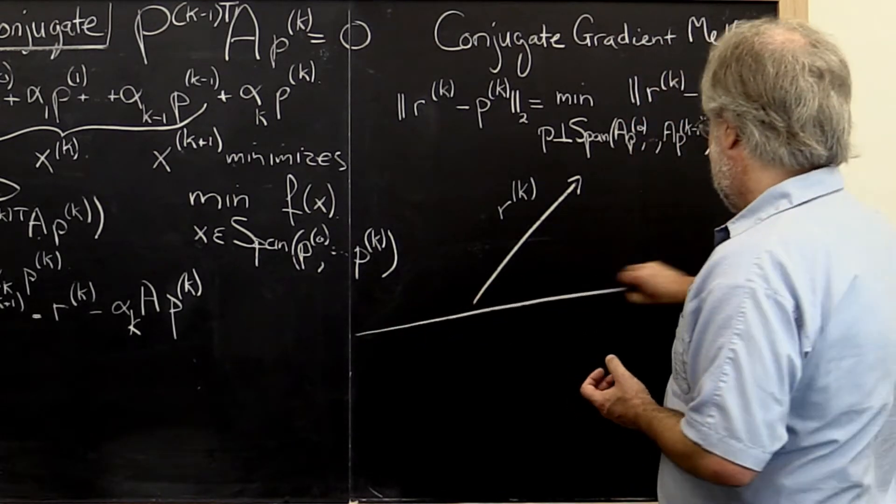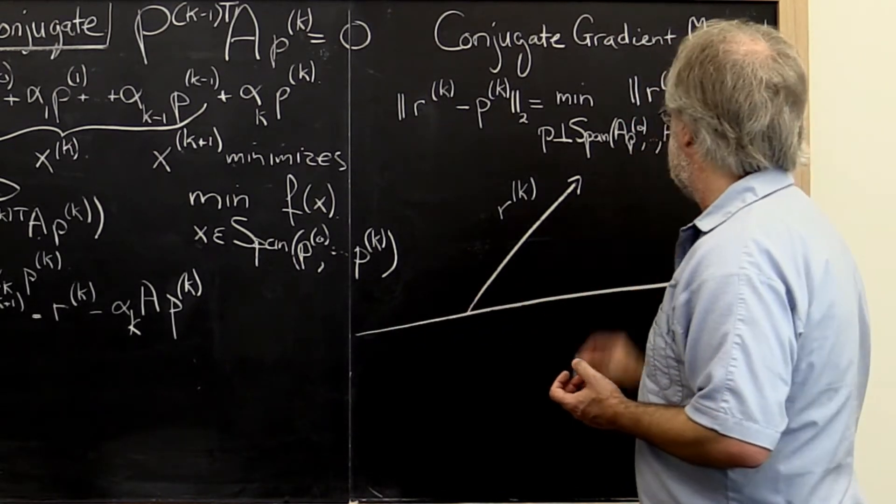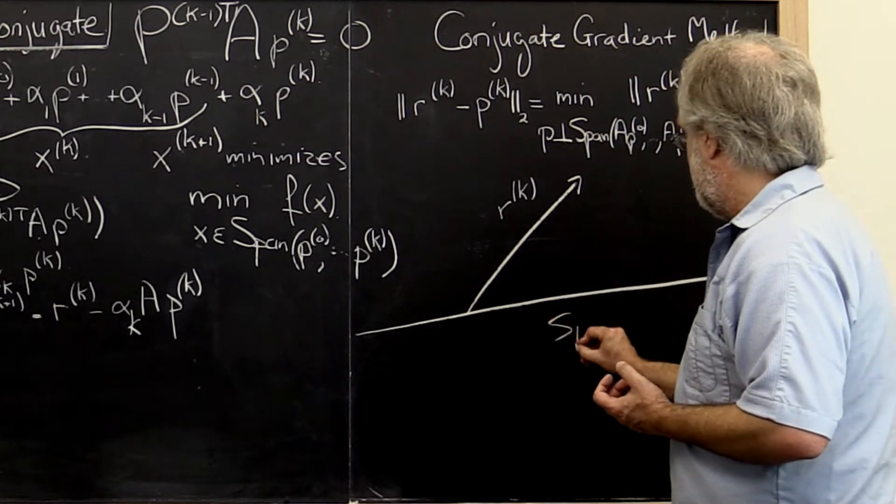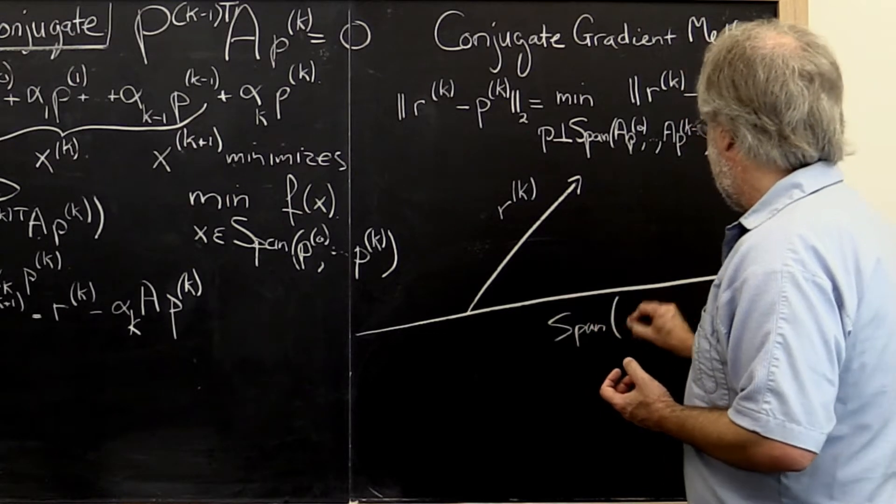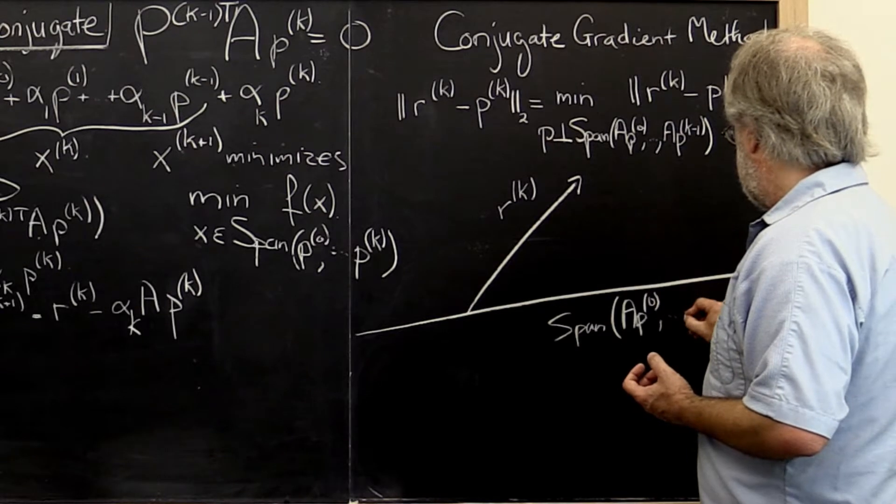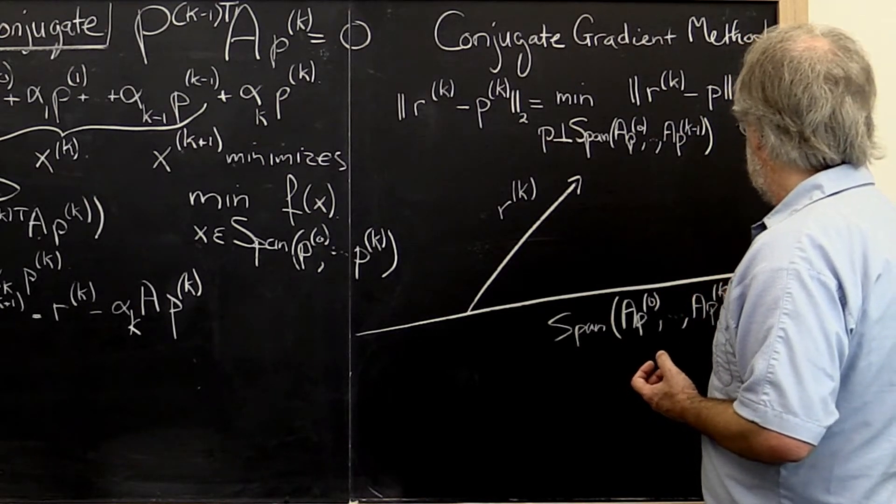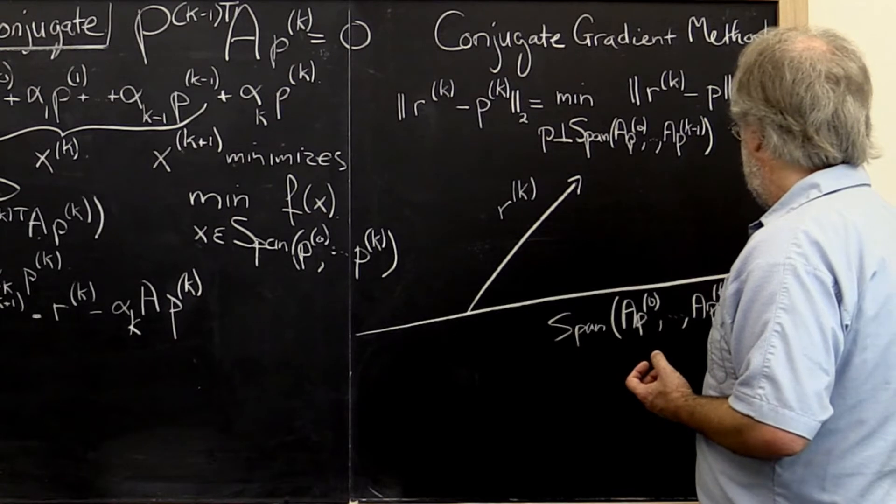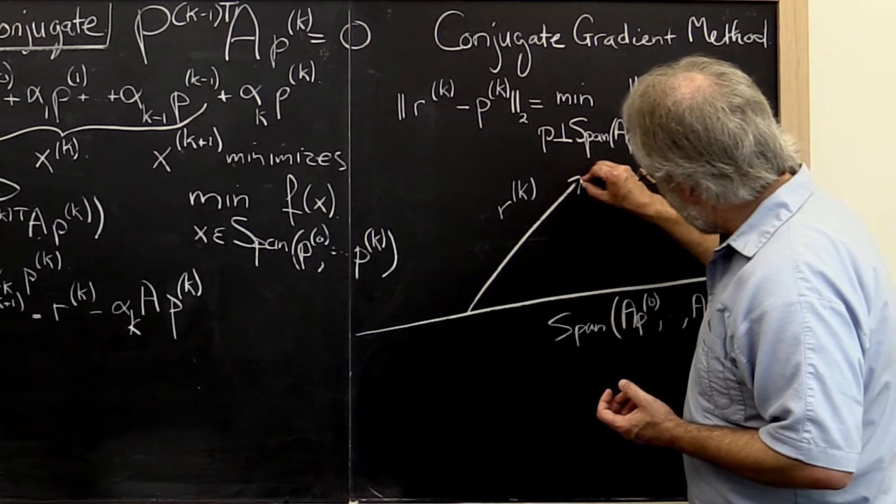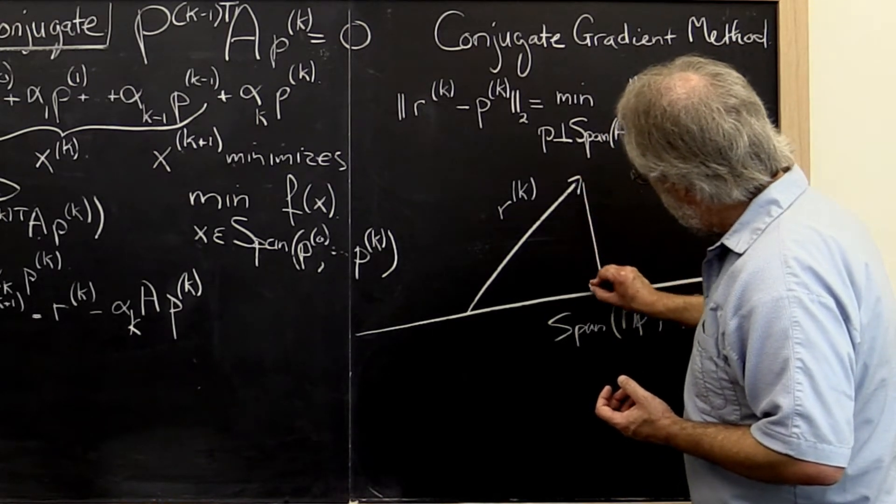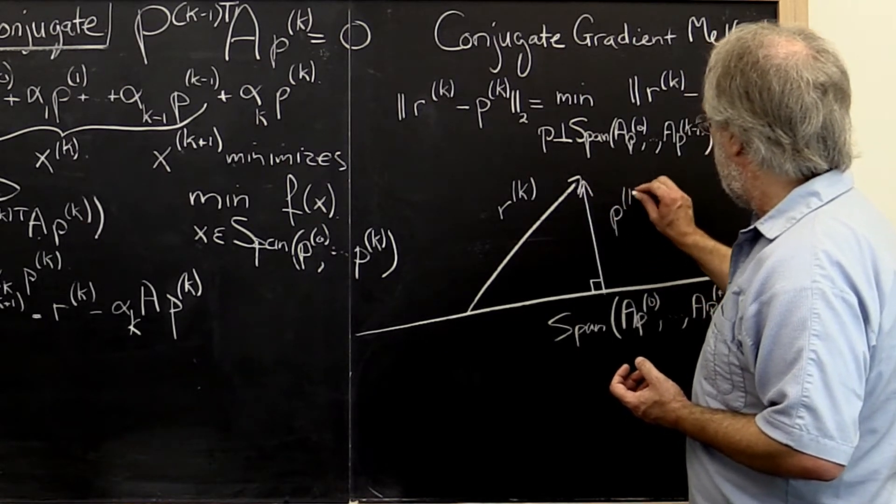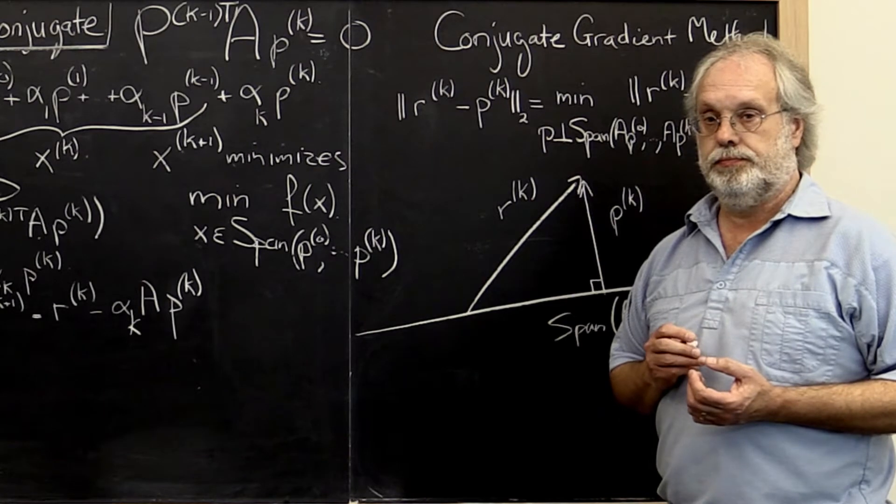We have a space, subspace, that's characterized as the space spanned by A times the various A conjugate directions, the previous ones. And what this here says is that we want to find the vector that's perpendicular to that subspace. And that will be our Pk. Okay?